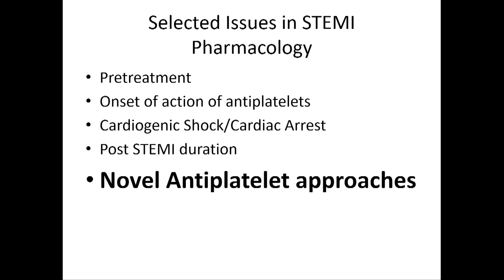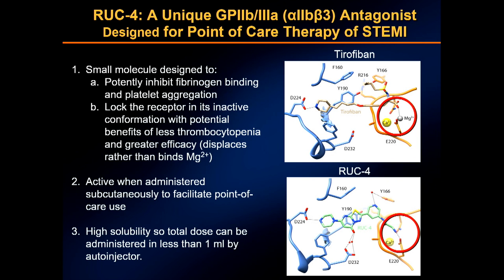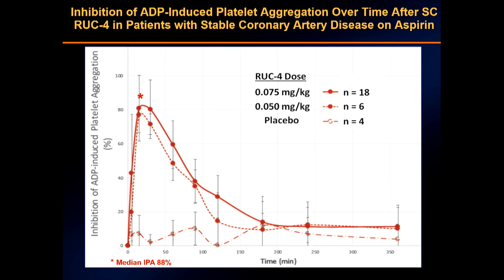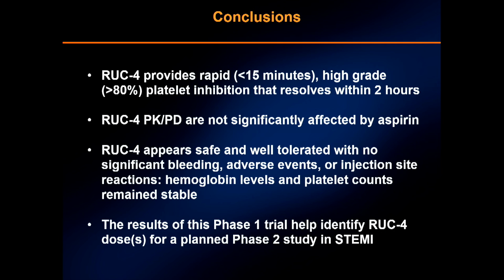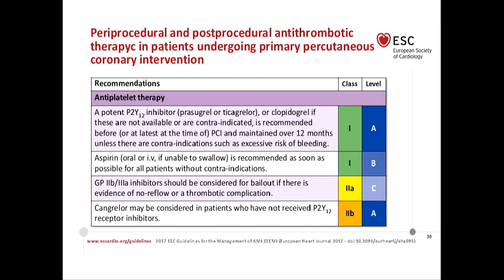Novel antiplatelet approaches are in development, including RUC-4, a subcutaneous agent designed for pre-hospital use with two to three hours of excellent antiplatelet action — analogous to ReoPro. Trials are underway. Current guidelines give a 1A recommendation for potent P2Y12 inhibitors (prasugrel and ticagrelor preferred, clopidogrel second choice) given as soon as possible; aspirin is 1B; GPIIb/IIIa inhibitors are 2A for bailout; and cangrelor in appropriate patients.